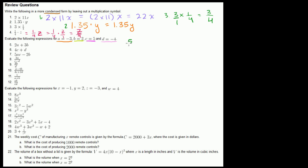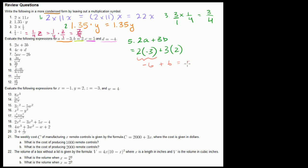Problem 5: we have 2 times a plus 3 times b. This is the same thing as 2 times negative 3 — since a equals negative 3 — plus 3 times b, which is 2. So: 2 times negative 3 is negative 6, plus 3 times 2 is positive 6, and that equals 0. Notice the order of operations: we did both multiplications before adding the two numbers. Multiplication and division take precedence over addition and subtraction.